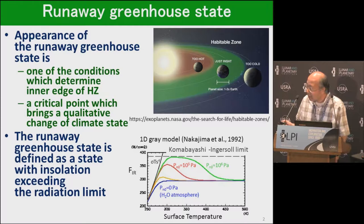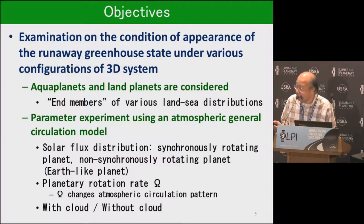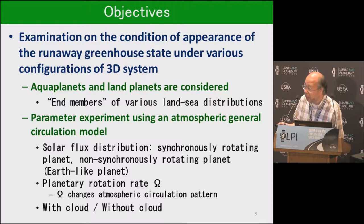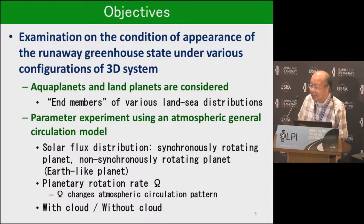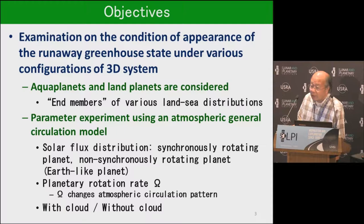The aim of this study is examination of the appearance conditions of the runaway greenhouse state for various conditions. We consider aqua planets and land planets. An aqua planet is a limit case of much water, and a land planet is a limit case of little water. We performed GCM experiments changing solar flux distribution, planetary rotation rate, and the existence of cloud.